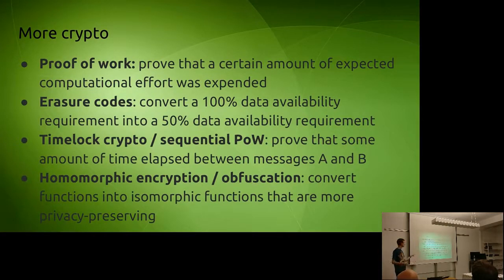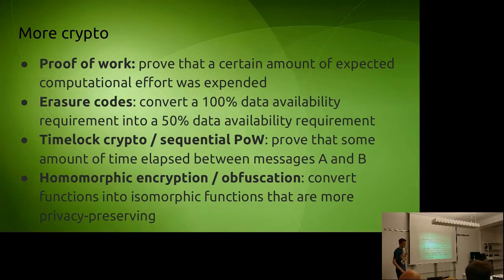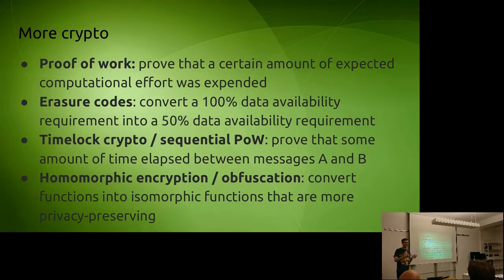We also have other tools. Proof of work is a cryptographic tool for proving you have access to a certain amount of expected computational effort — on average, a certain amount of computational effort was expended to create it. Erasure codes convert a 100% data availability requirement into a 50% data availability requirement: if you have one gigabyte of data, you can use erasure coding to turn it into two gigabytes, and any one gigabyte out of those two — even spliced from chunks across the file — can be used to recover the original data.